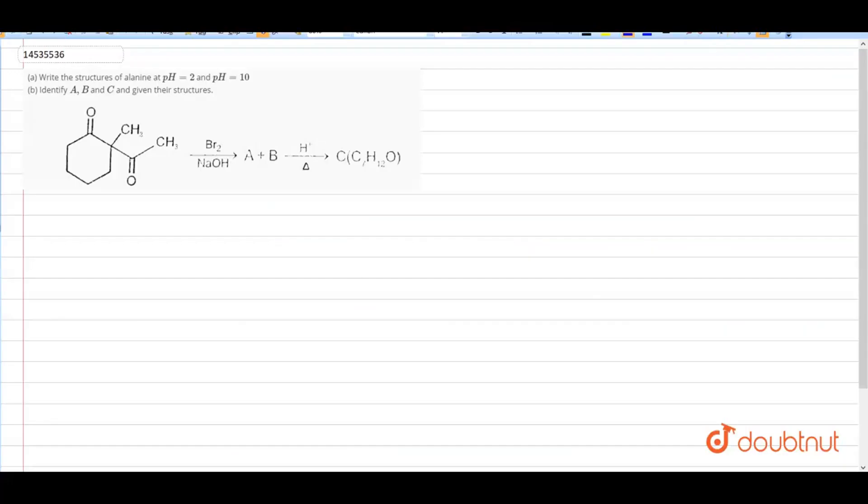Hello friends, in this question, first part is write the structure of alanine at pH 2 and pH 10. And B part, identify A, B, and C, given their structure.